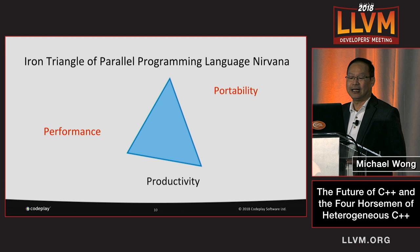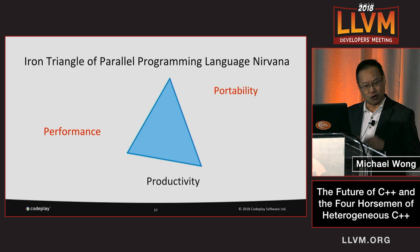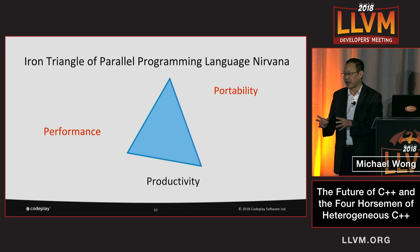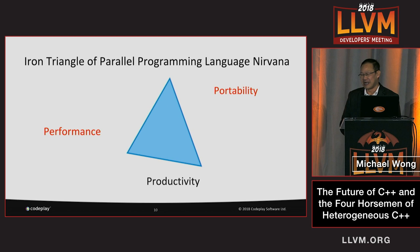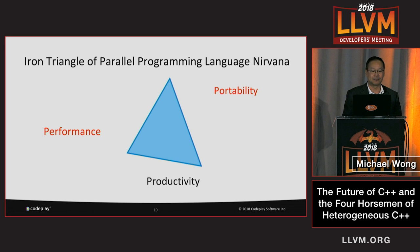The talk is going to be about performance, portability, and productivity — what I've been calling the iron triangle of parallel programming language nirvana. The reality of engineering is that you can't optimize for all three. If you've been a team leader trying to balance resources, features, and timing, you know what I mean. The best you can probably do is optimize for one or two of these things. We're going to aim for what's generally called performance portability.